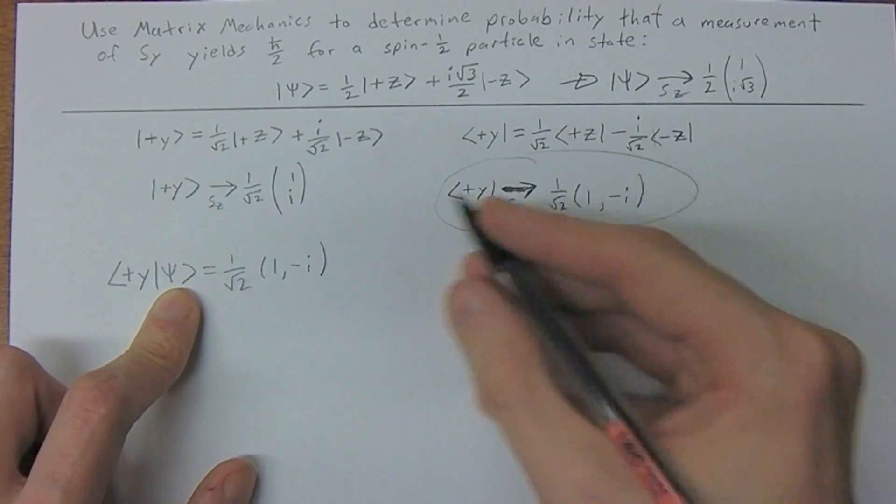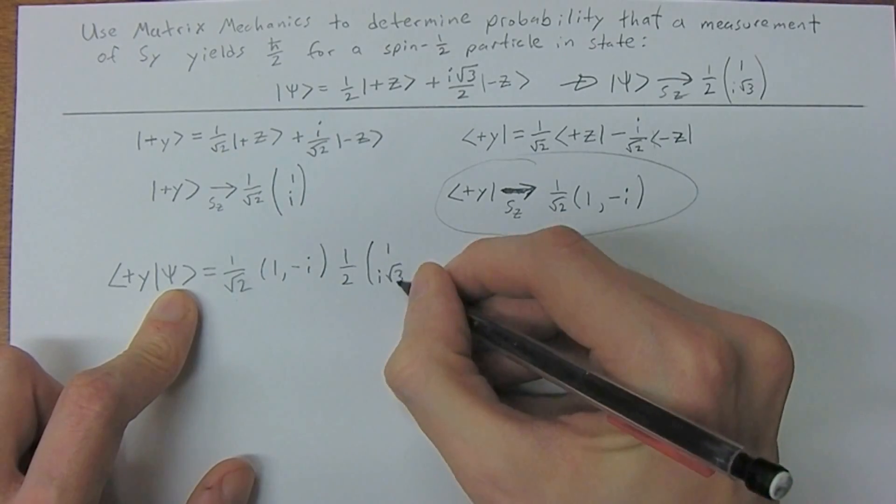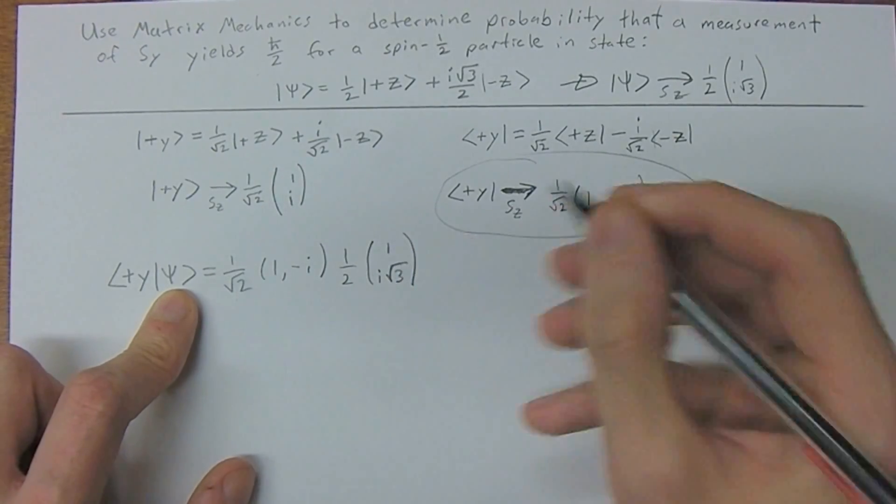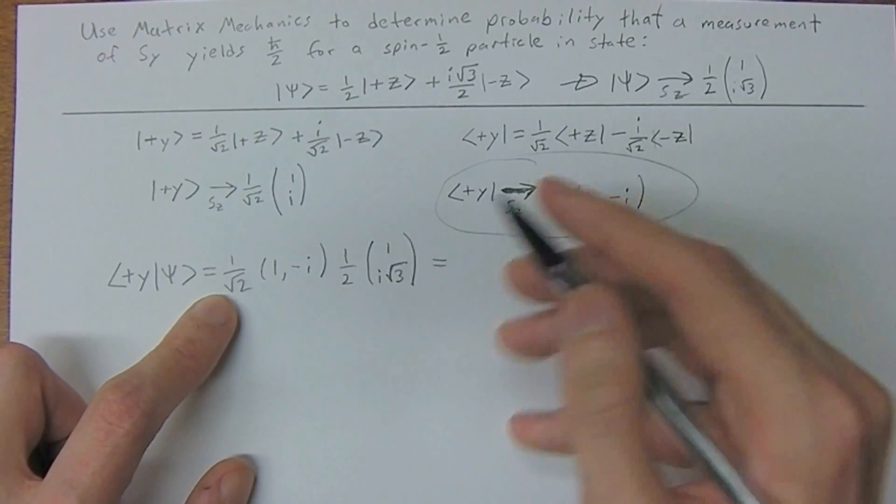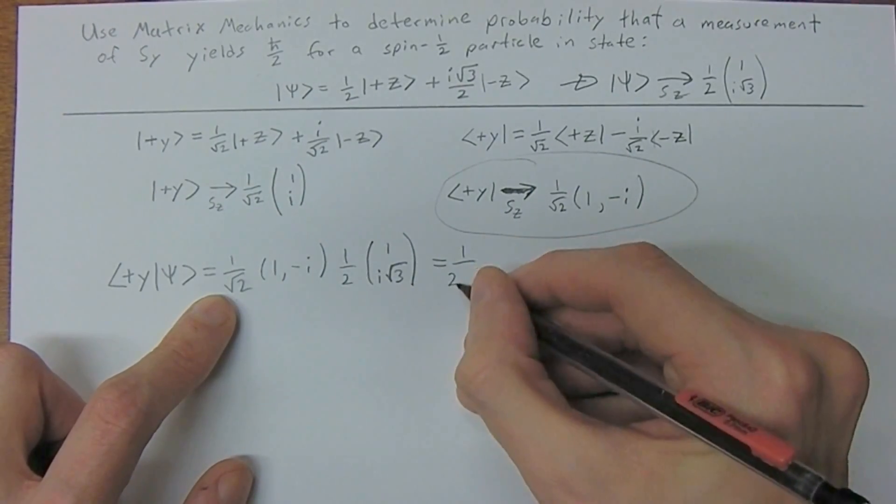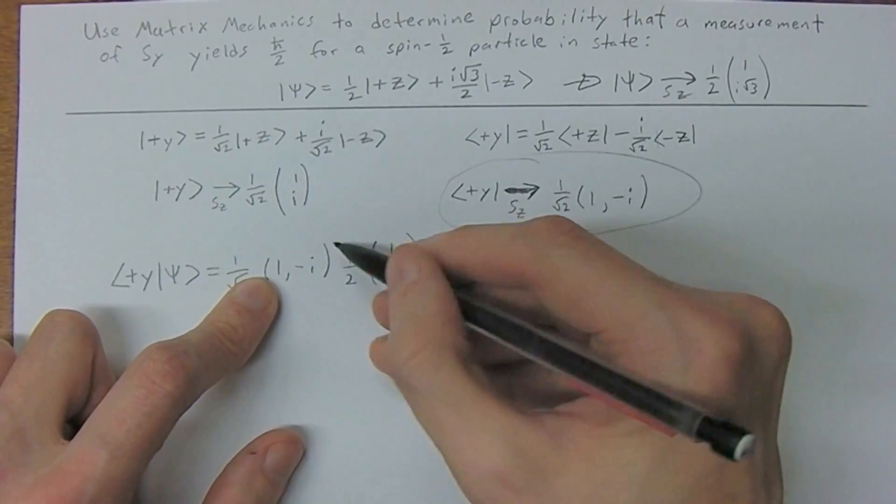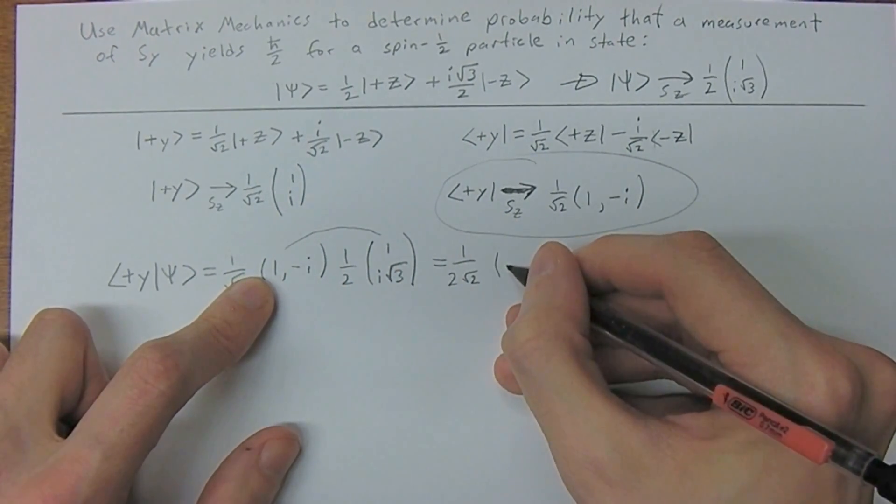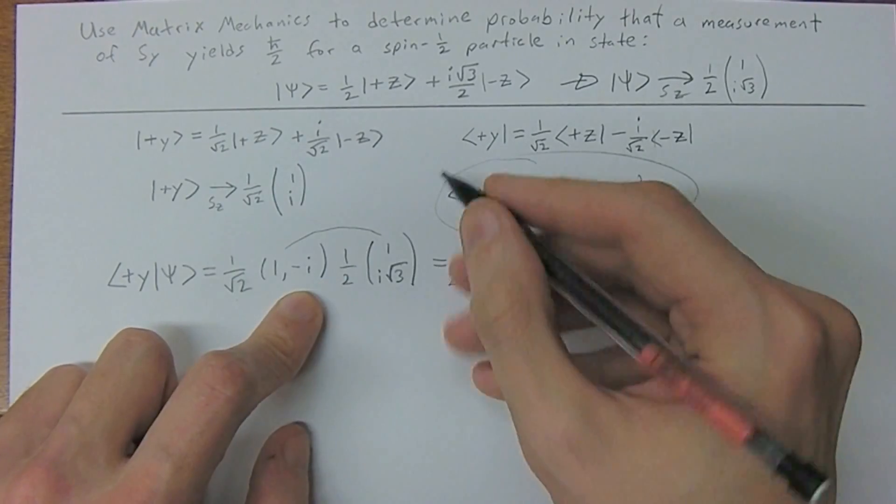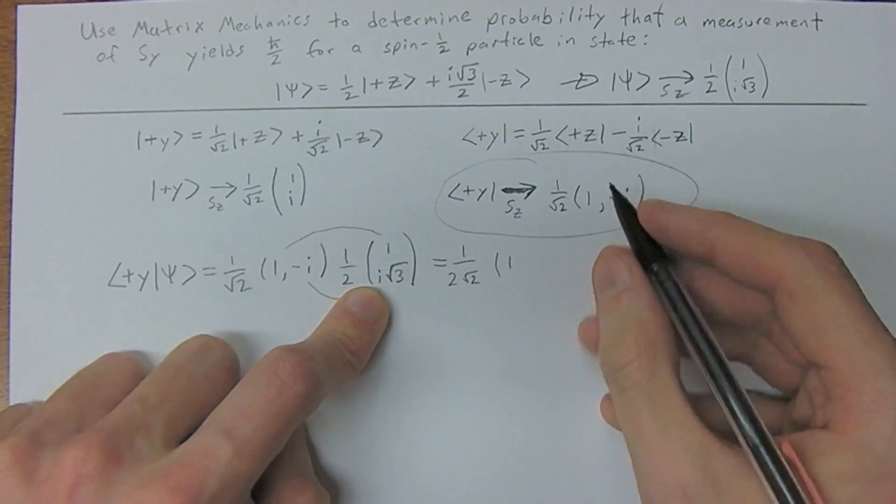So then, we'll fill that in here. So psi, so we have a 1/2, and we have a 1, i square root of 3. So we do this, so 1/2 times 1 over root 2 is 1 over 2 root 2. And then we need to multiply these matrices, so 1 times 1 is 1, and minus i times i square root of 3.